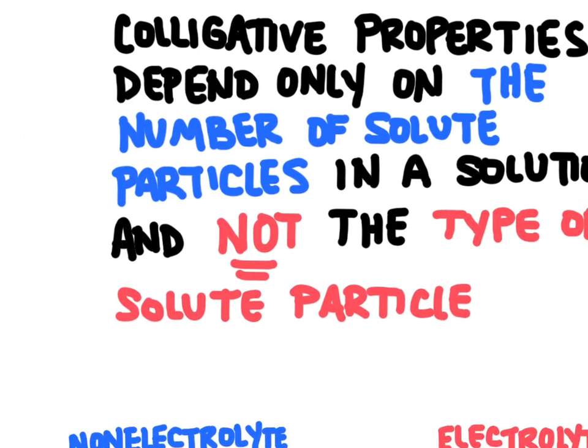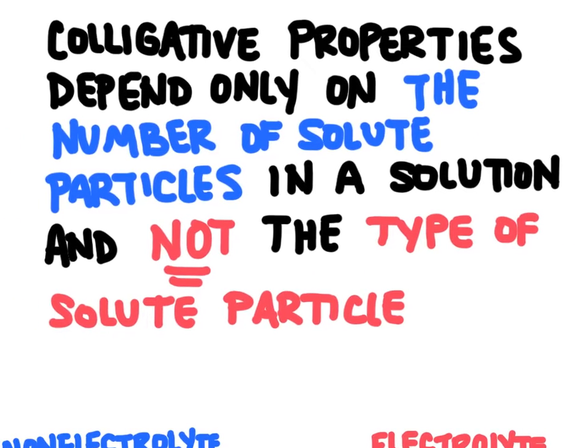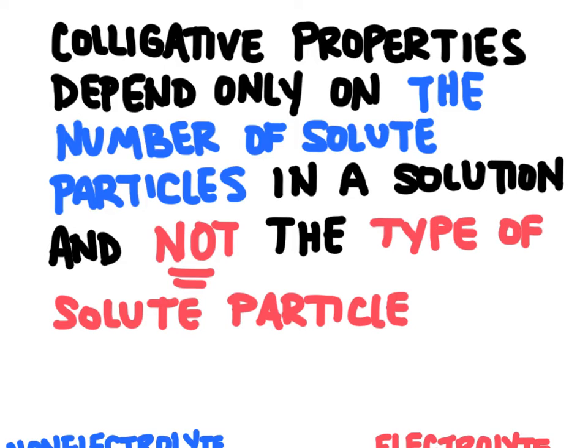A colligative property is a property of matter that's going to depend on the number of solute particles in a solution — or in other words, dissolved in a solution — and it's not going to depend on the type of solute particle.